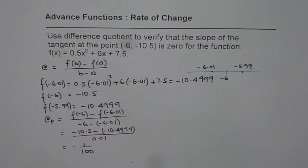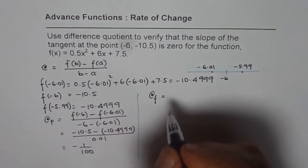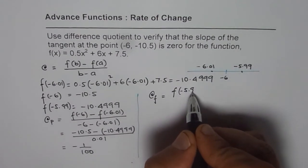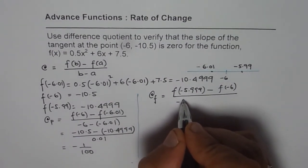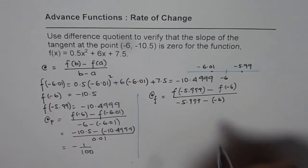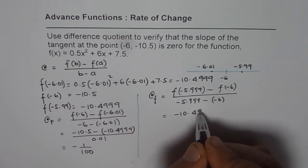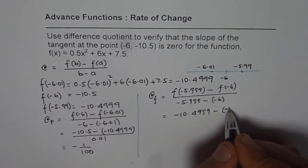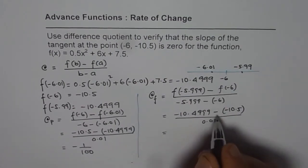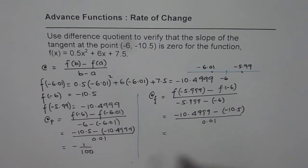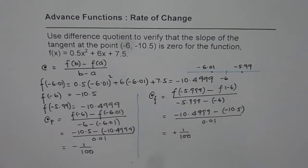Now let us find the following rate of change: [f(-5.99) - f(-6)] / (-5.99 - (-6)). Substituting: (-10.4999 - (-10.5)) / 0.01. Using the calculator, this gives +1/100 — the same magnitude but with a positive sign.